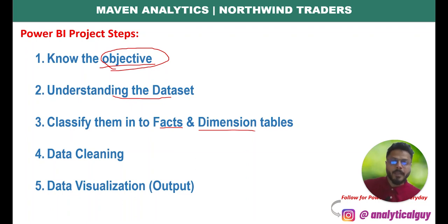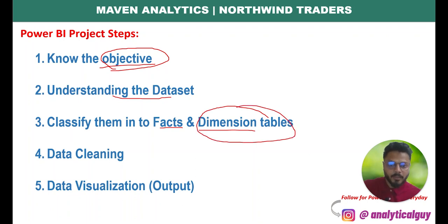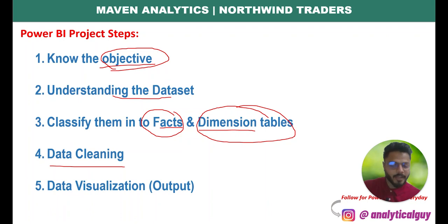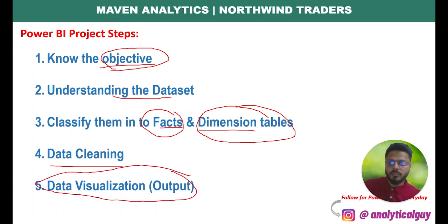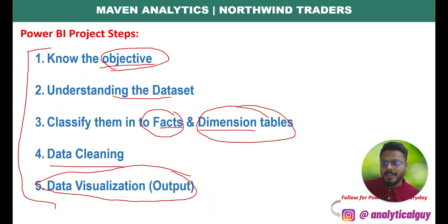Then we classify tables into facts and dimensions. Dimension tables are like masters — you have a date master, product master, location master. Fact tables are transaction tables, like sales data based on order date. Generally dimension tables are smaller than fact tables. Then we clean the data if needed, which can be done in Power Query. Finally, step five is data visualization. So the five steps are: know the objective, understand the data, classify into fact and dimension tables, clean the data, and do data visualization.